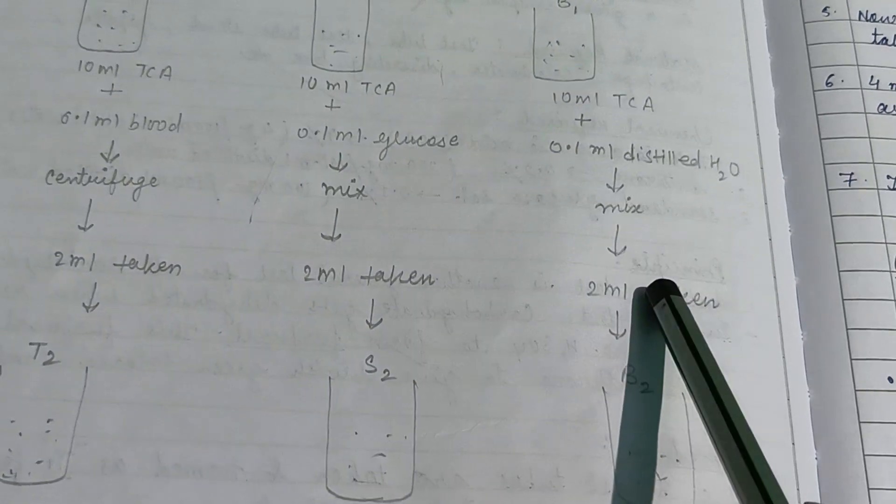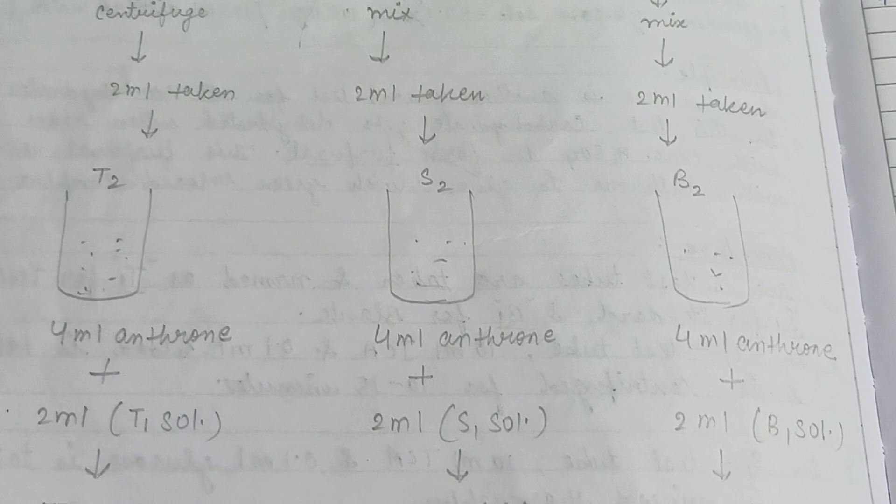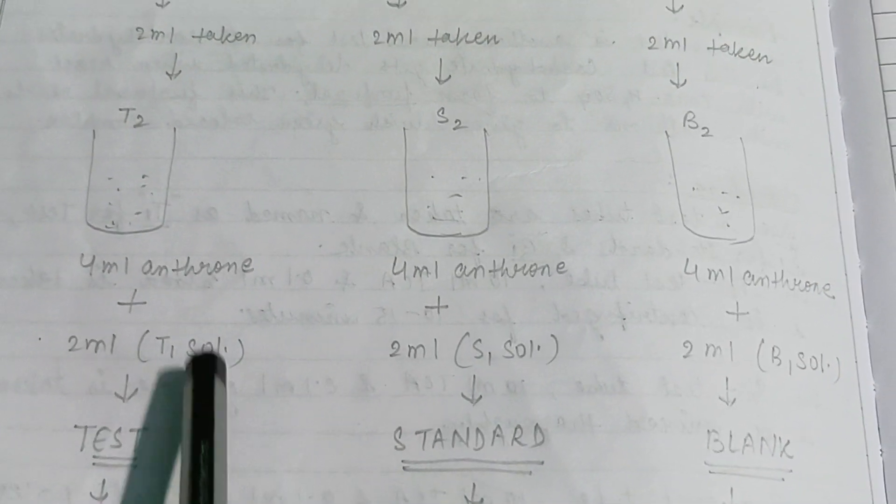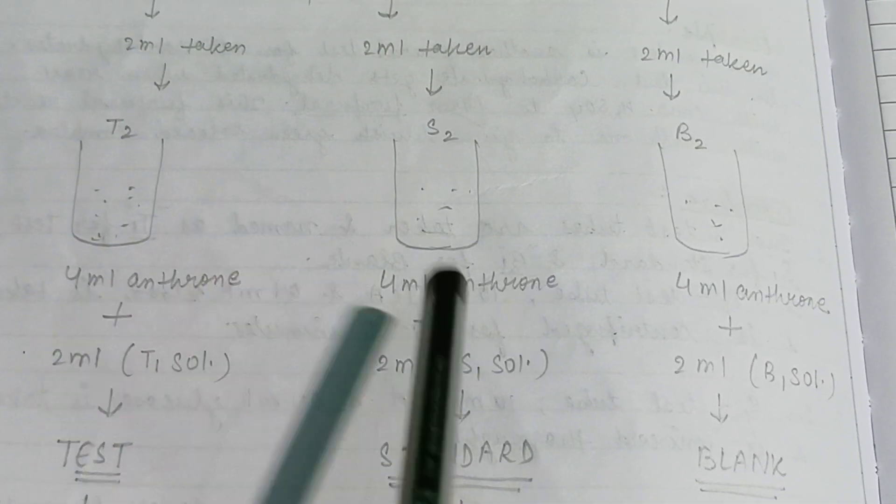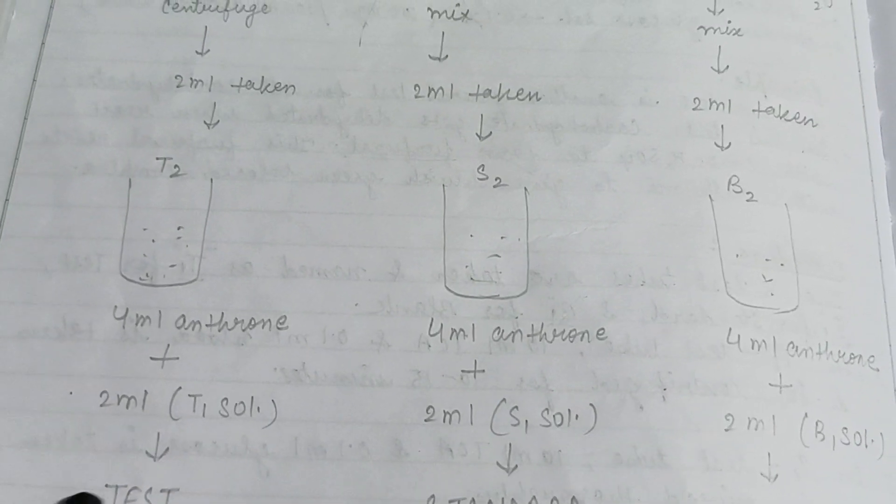2 ml from B1 is taken in the B2 test tube. Then 4 ml anthrone is added in each tube T2, S2, and B2, and the solution is mixed. The reading of the colorimeter is estimated.